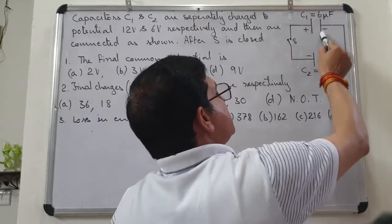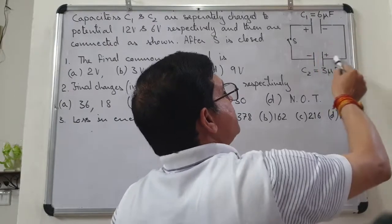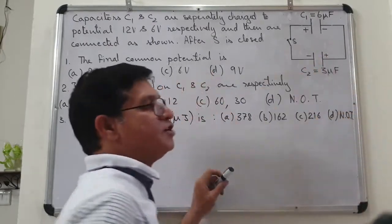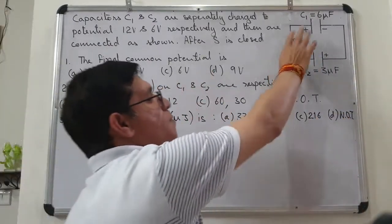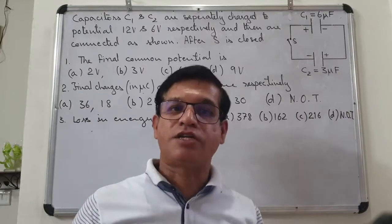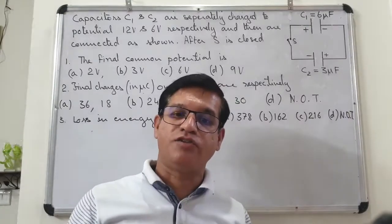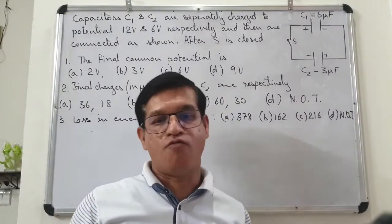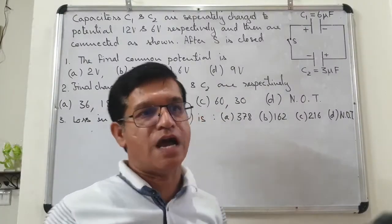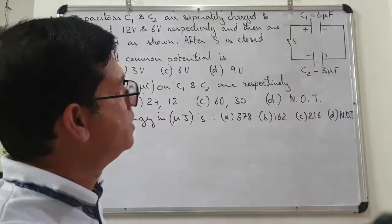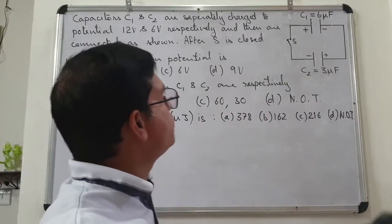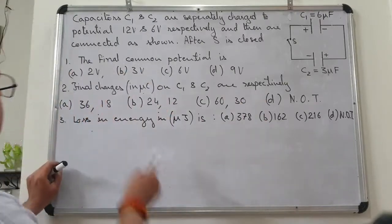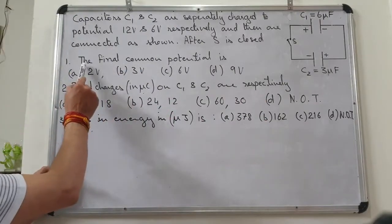इसकी negatively charged plate इसकी positively charged plate से connected है — यानि कि opposite nature के charges जिन plates के पास हैं वो आपस में connected हैं। अब देखते हैं क्या पूछ रहा है।